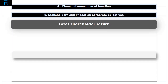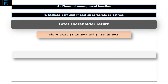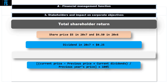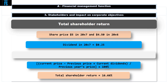A shareholder's return on investment is made up of dividends and capital gain on the value of their shares. Let's say the share price of Top Dog was $5 in 20x7 and $4.50 in 20x6, and the dividend paid in 20x7 was 25 cents. You can then calculate the total shareholder return: it is the current share price less the previous year's share price, plus the current year's dividend, divided by the previous year's share price, expressed as a percentage. So it is 16.66% for Top Dog.